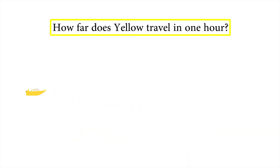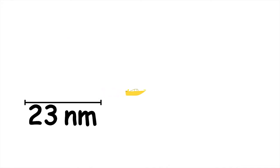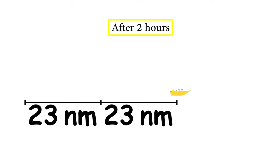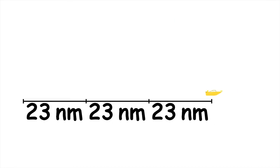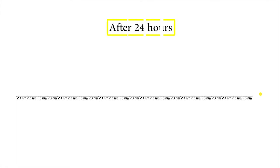If Yellow travels at 23 nautical miles an hour, in one hour, he covers a distance of 23 nautical miles. But then he travels another hour, so we have to add another 23 nautical miles. Then another hour and another 23 nautical miles. We have to repeat this process 24 times, because that's the number of hours he spends travelling by boat.